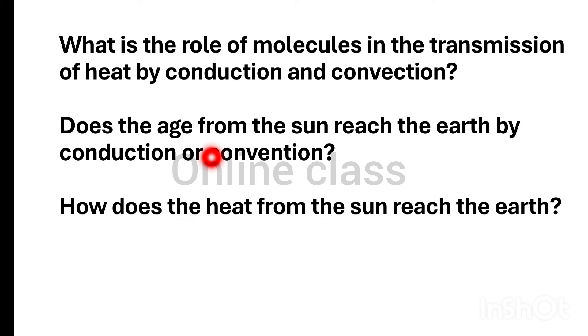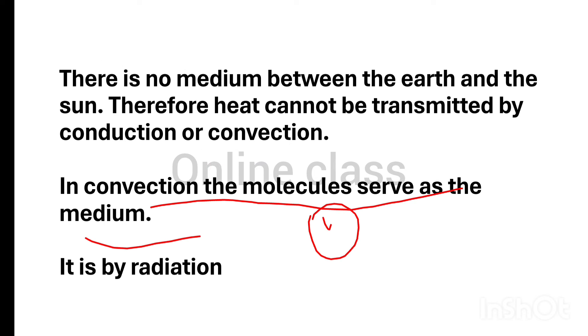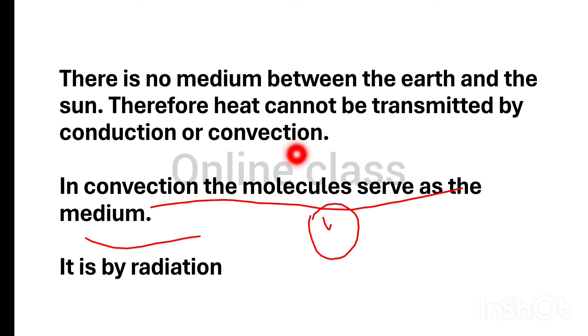The waves from the sun reach the earth by conduction or convection? There is no medium between the earth and the sun. Therefore, heat cannot be transmitted by conduction or convection.